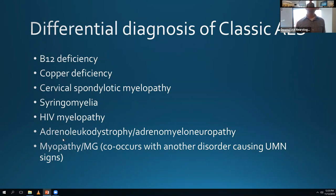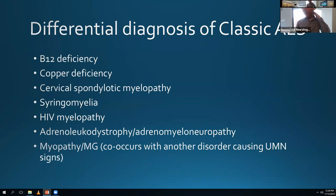Hirayama disease, or monomelic amyotrophy, tends to affect younger men, most commonly of Asian descent, with lower motor neuron weakness of one arm. The atrophy and weakness develop and then stabilize - never progressing beyond that. We think there's a problem in the cervical spine where the spinal cord atrophies. You can do flexion MRIs of the C-spine and see abnormal signal. The prognosis is very different - they tend to have a fine prognosis, though they have morbidity from loss of function in one arm.